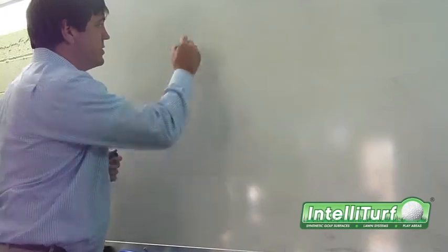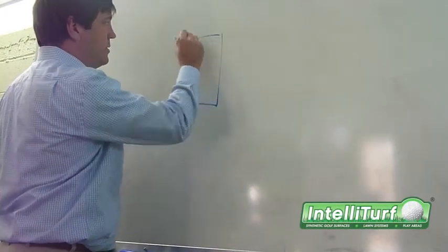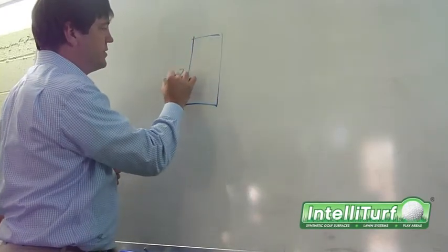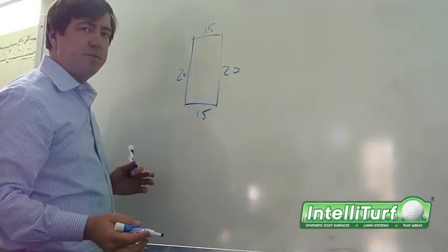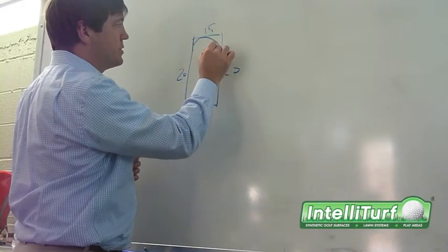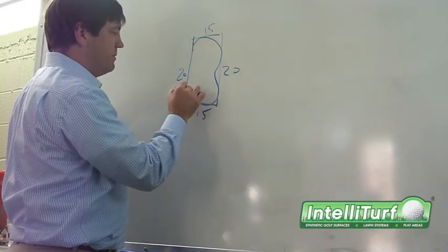The basic calculation is to add up the distance around the green. Let's say this is 20, 20, 15, 15. We just have a small golf green where we're going to shape out a 15 foot green.